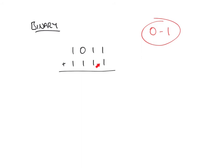Our base is 2, so we carry 2 to the next column, but in that next column we only enter it as 1 — one lot of the base, one lot of 2. So that 2 when carried is represented by just a 1 in our next column, and because 1 plus 1 was 2 and we've carried that, we're left with 0 in our first digit. In the next column we have 1 plus 1 plus the 1 that we've carried, giving us 3. Again 3 is not permitted; we carry one lot of 2, leaving us with 1.